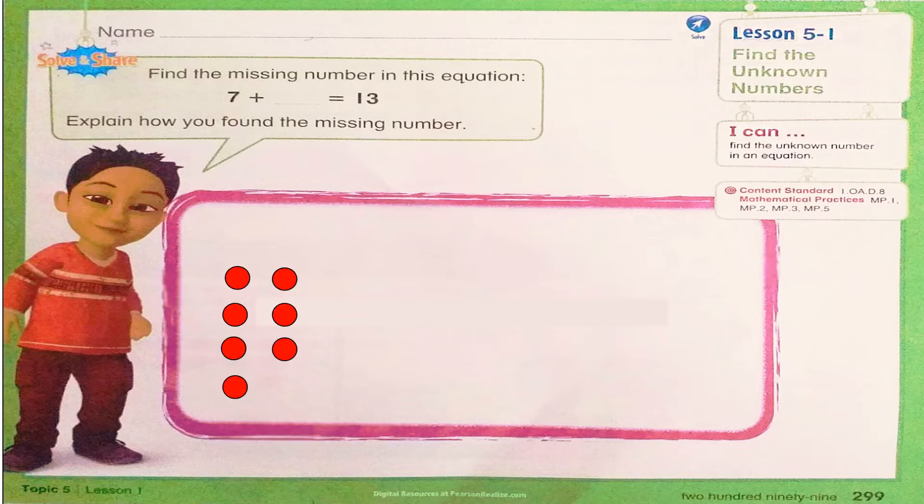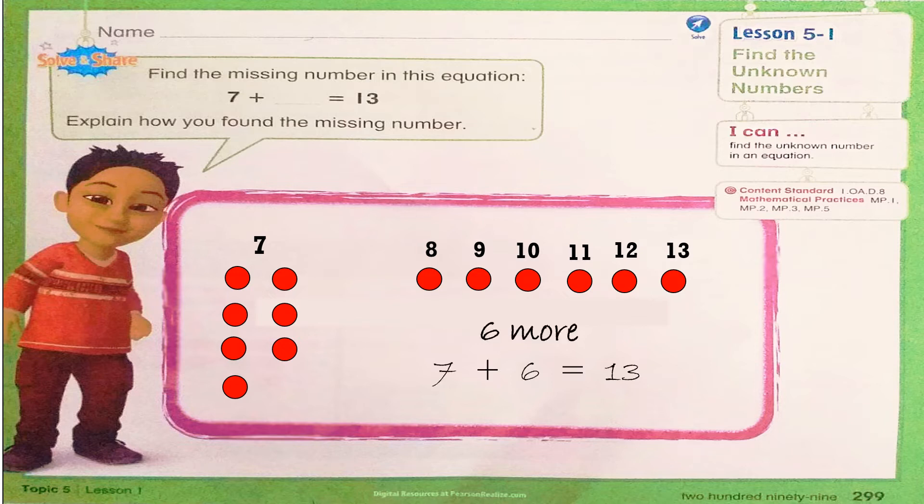7, 8, 9, 10, 11, 12, 13. Now I have to count how many more counters I have. Yes, 6 more counters. So, 7 plus 6 equals 13.